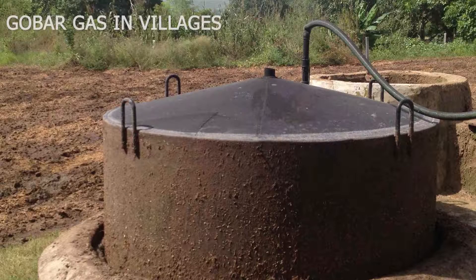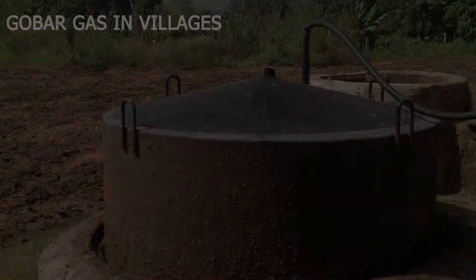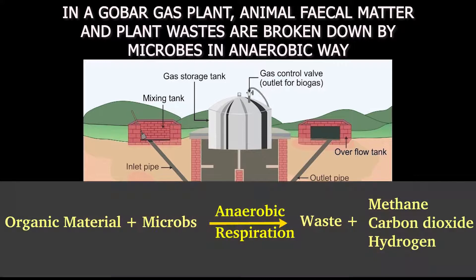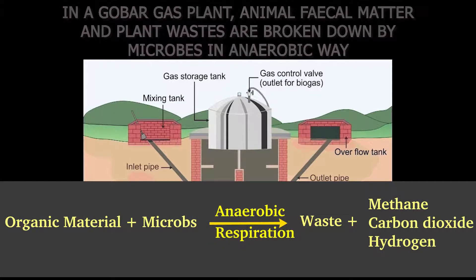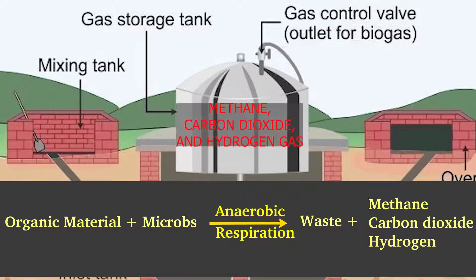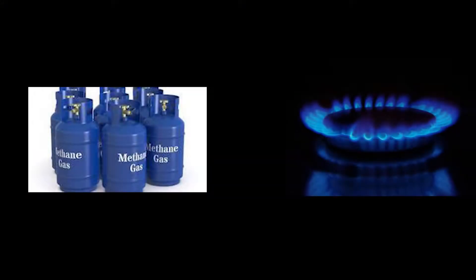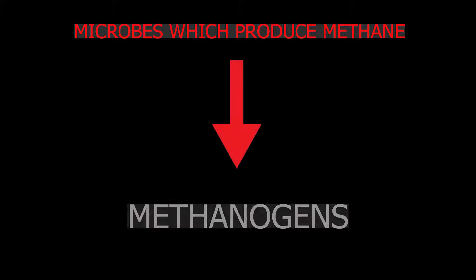Uses of microbes in biogas production. You must have seen gobar gas in villages. In a gobar gas plant, animal feces and plant wastes are broken down by microbes in an anaerobic way. As a result, methane, carbon dioxide, and hydrogen gases are produced. Methane is flammable and used as fuel. Microbes which produce methane are called methanogens.